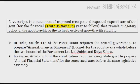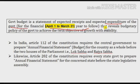Having understood all the basic concepts, now we will see what the government budget is. We will try to know the definition of the budget. The government budget is a statement of expected receipts and expected expenditure of the government for the financial year to follow, that reveals the budgetary policy of the government to achieve the twin objectives of growth with stability.